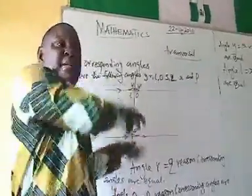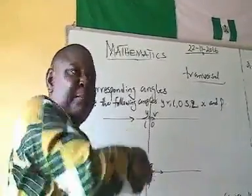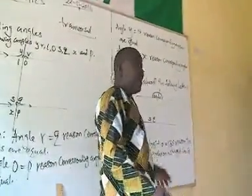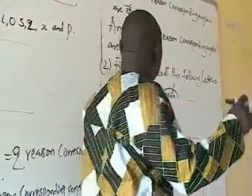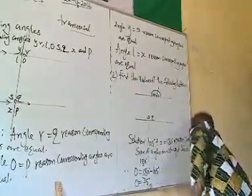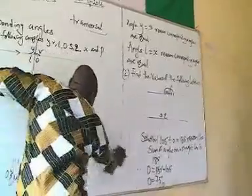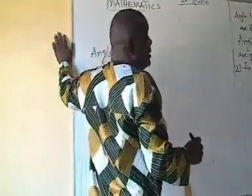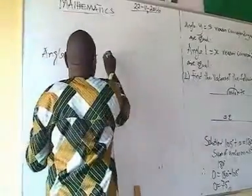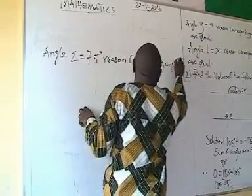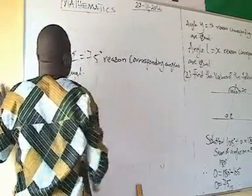So that you know how to calculate problems arising from corresponding angles. 180 degrees minus 105 — what do we have? We have 75. We are looking for this angle and this angle. Therefore, angle Q equals 75 degrees — reason: corresponding angles are equal.